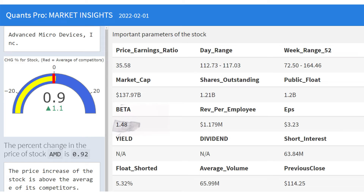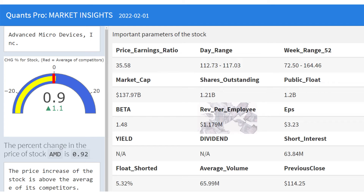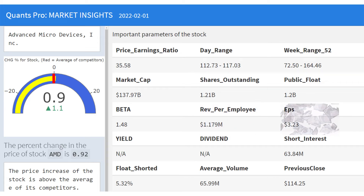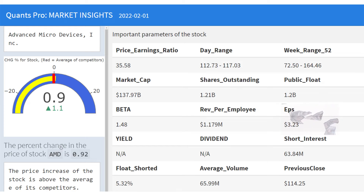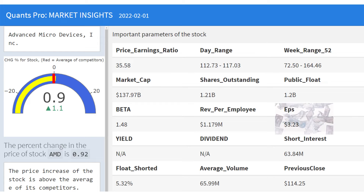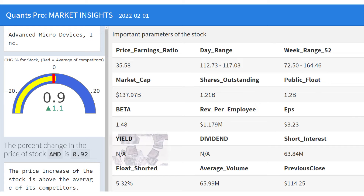Beta value is more useful when evaluated together with other factors that characterize the market, and can give important clues for measuring price risk. The revenue per employee ratio represents income per employee and is most useful when looking at historical changes in a company's own ratio or comparing it with other companies in the same industry. The EPS value — earnings per share — indicates how profitable a company is; the higher the EPS, the more profitable. Yield is a return measure for an investment over a set period of time, expressed as a percentage, but does not make sense for investment decisions alone.